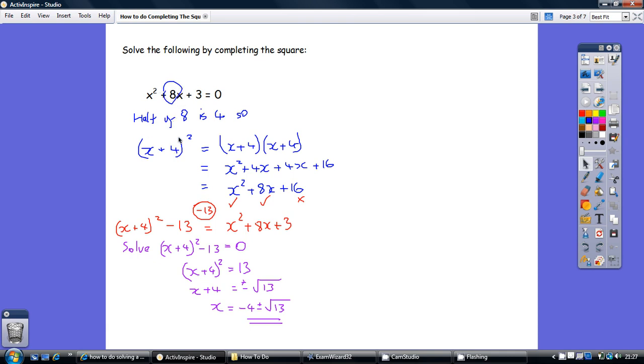So kick off with x plus 4 all squared. Now, that's obviously x plus 4 times x plus 4. Do all the multiplying out, gather your terms, and you get x squared plus 8x plus 16.